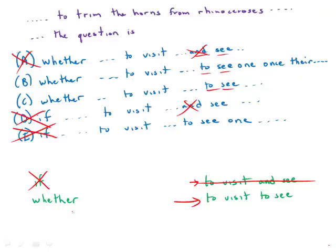In B we have this lovely pronoun problem. To visit to see one once their horn has been trimmed. Well one is singular. So the only thing that this plural pronoun can refer to are the tourists themselves. And I'm really charmed by that idea of tourists who go to these game preserves having to have their horns trimmed. But obviously that does not make sense. That's not what we're trying to say here in this context. So B is out.